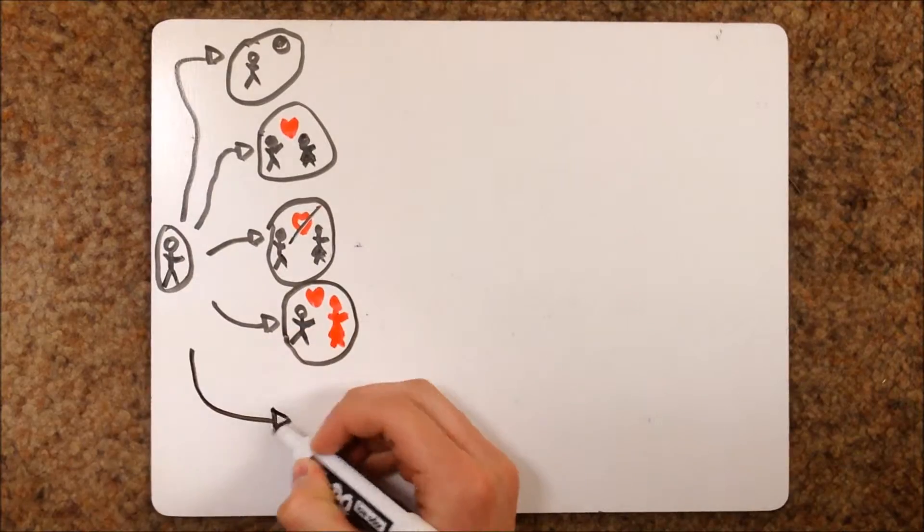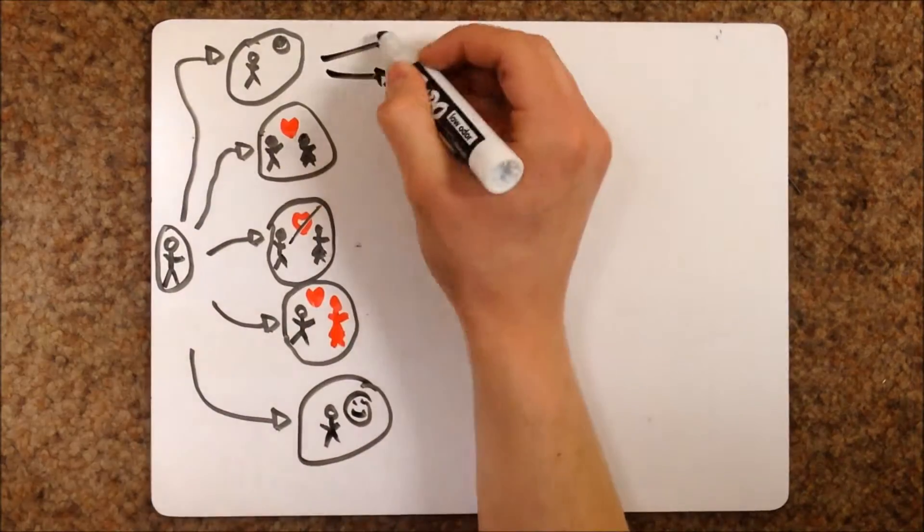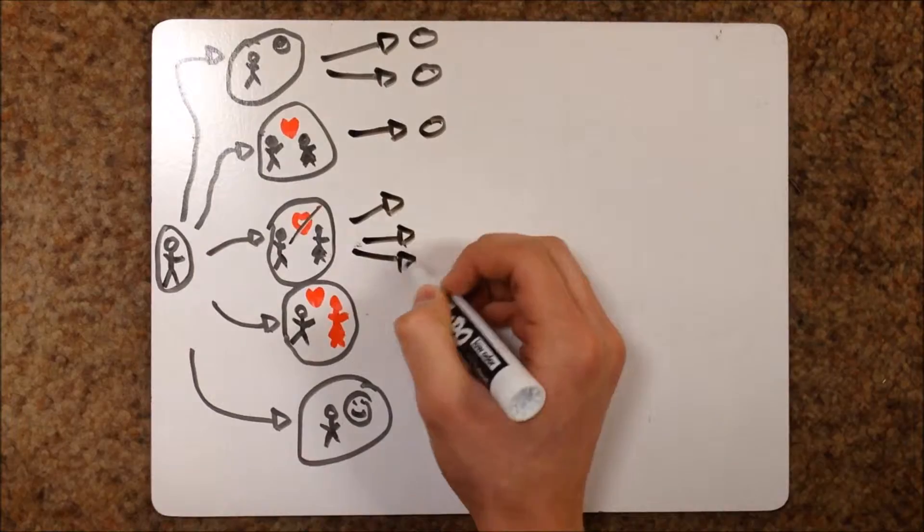According to many worlds, all these outcomes happen in their own respective timeline, which in turn branch into infinitely more timelines.